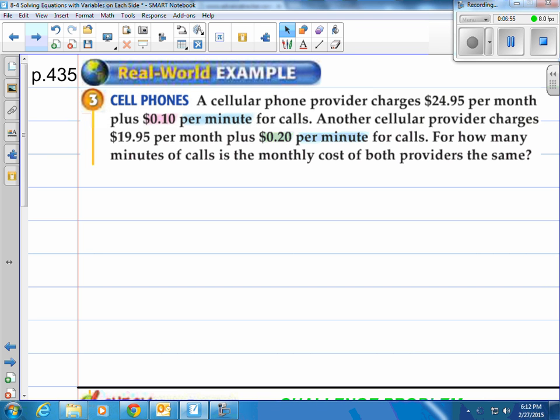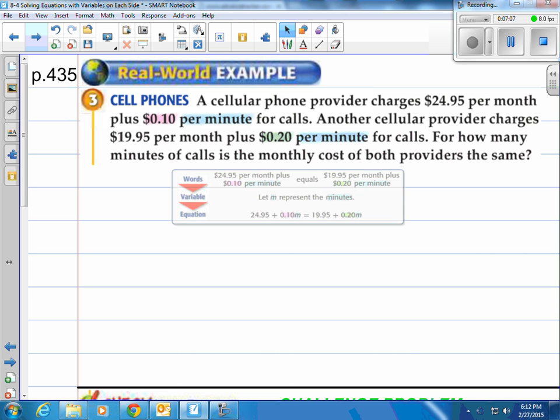For how many minutes of calls in this situation, is the monthly cost of both providers the same? So what we have are two providers, and we're going to have one on the left, one on the right, and we're going to have them equal to each other so that we can figure out when they will be equal. When will the one provider be equal to the other provider at these different rates?